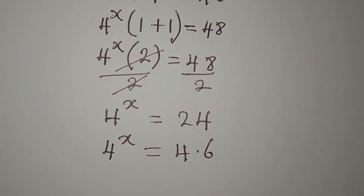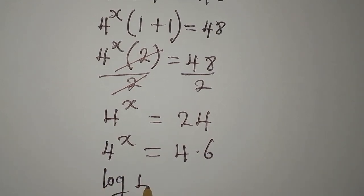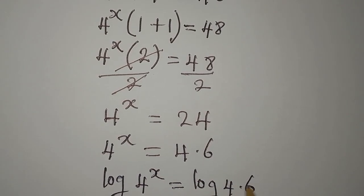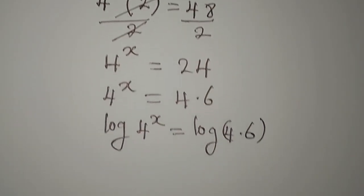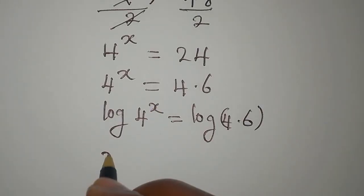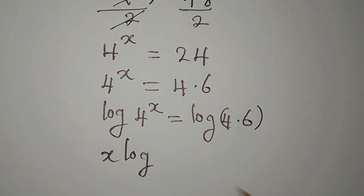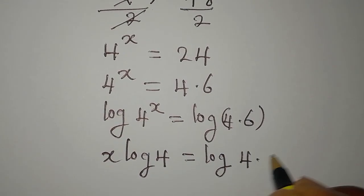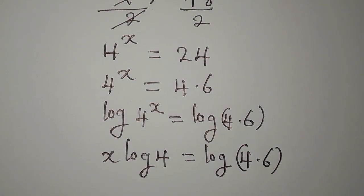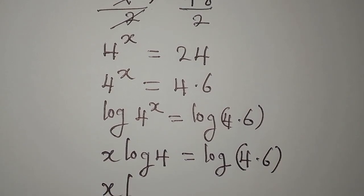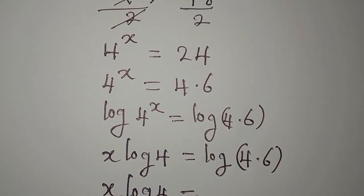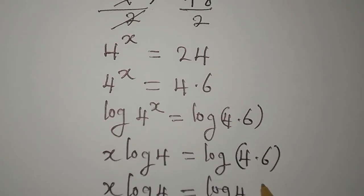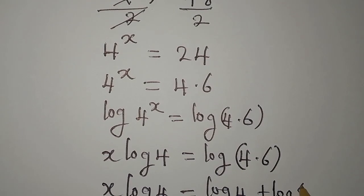The next thing we'll do is take the log of both sides, so that log of 4 to the power of x will be equal to log of 4 times 6. Remember the power goes behind to multiply, so x times log 4 is equal to log of 4 times 6. This gives us x log 4 equals...